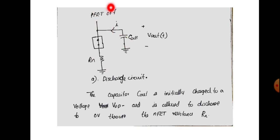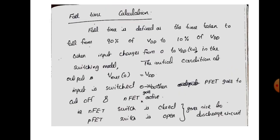Vout starts at VDD. Since PFET is off, there is no charging path, so the only path is the discharge path through the NFET. The capacitor Cout is initially charged to voltage VDD and is allowed to discharge to 0V through the NFET and resistance Rn.